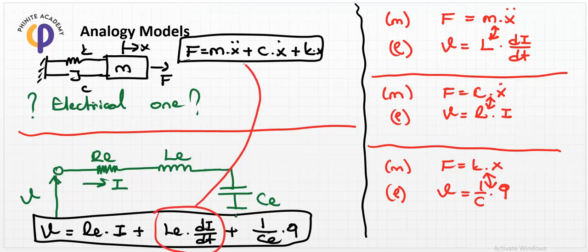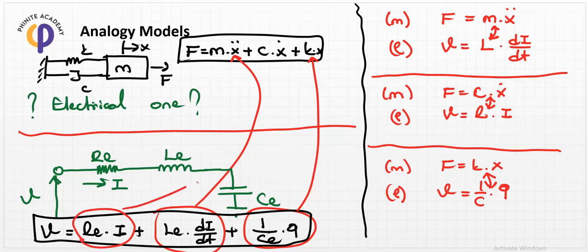The analogy model means: inductance L is interpreted by mass m, the capacitive storage term (1/C)·q is interpreted by k·x, and resistance R is interpreted by c·ẋ. We do not need to create a mechanical model if we have the electrical analogy for the mass-spring-damper system. We only use this electrical analogy to solve the mechanical problem, transferring all coefficients and solving via Kirchhoff's rules.